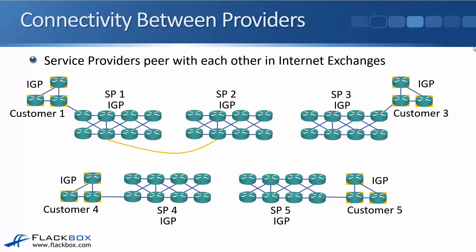Service providers peer with each other at internet exchanges, which are big data centers that allow them to connect. In our example, Service Provider One has their IGP and their customers and connects to Service Provider Two, who also has their IGP and customers. Service Provider Two connects to Service Provider Three; SP One is connected to SP Four, SP Four to SP Five, and SP Five to SP Three. This topology is just an example — in the real world service providers connect to multiple different service providers — but this topology will be helpful for examples later.